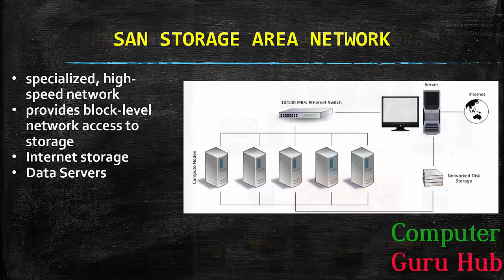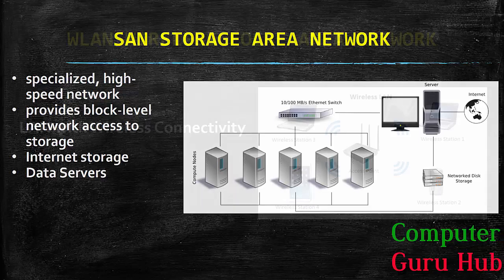The next network type is SAN — Storage Area Network. It is a specialized high-speed network used to provide block-level network access to storage. It means if I am getting storage on the internet, or we can say a different form of cloud — for example, Google Drive. Google Drive provides storage facility, and it has various data servers installed at different locations. When they are combined together, they are known as SAN — Storage Area Network.